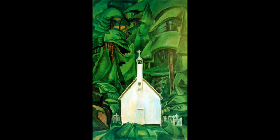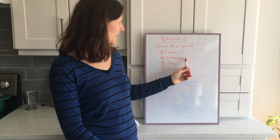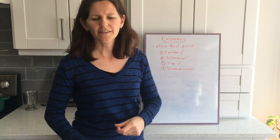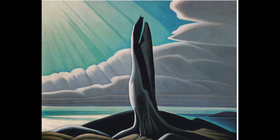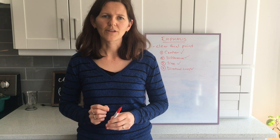Moving on to this beautiful Lawren Harris, we have got all four criteria working. The focal point is obviously on that big dead tree stump - he's put it in the center, made it different and darker from the sky behind it, made it really big, and there are directional lines. Do you see those obvious direction lines coming off the sun - those sun wings? They actually act as arrows dragging your eye straight to that focal point. It's interesting how you can use lines to manipulate where the viewer's eye goes.